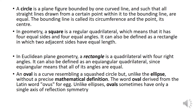A circle is a plain figure bounded by one curved line, such that all straight lines drawn from a certain point within it to the bounding line are equal. The bounding line is called its circumference and the point is the center.